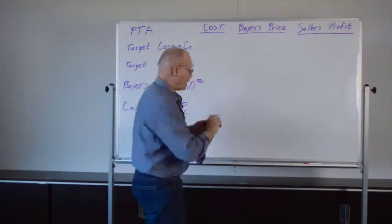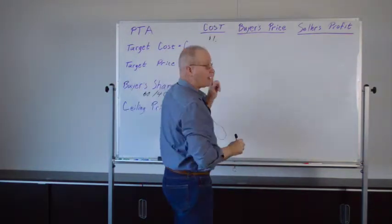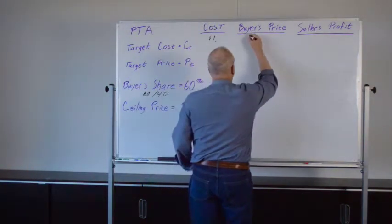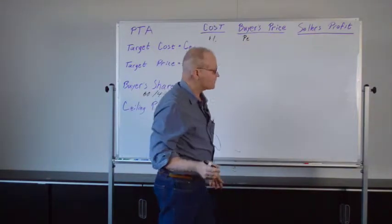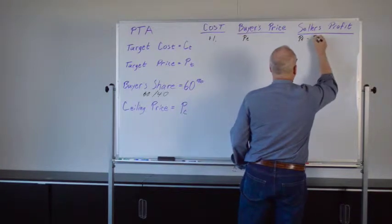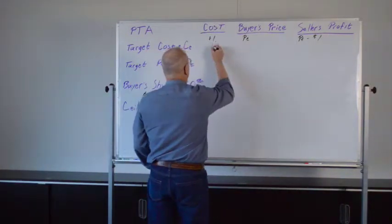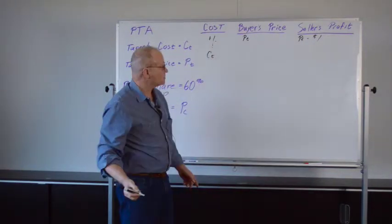So here we go. We have our first dollar of cost. And the buyer's price is going to be P sub T. The seller's profit is going to be P sub T minus the dollar. And this is going to continue up until the target cost.